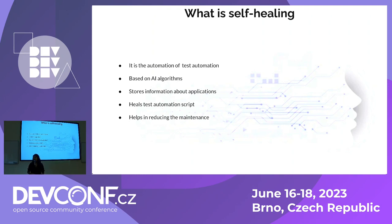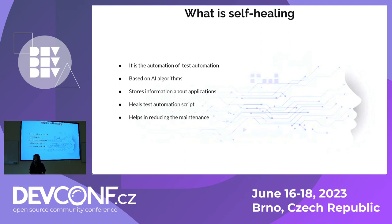The tool stores information about the application — about your system and about your objects. It then heals the automation script. We already saw that it helps in reducing maintenance, reducing manual effort, which can reduce the cost and time involved in doing manual tasks. This is all about self-healing, which is provided by the AI-based testing tool.